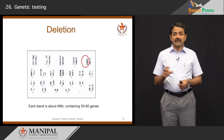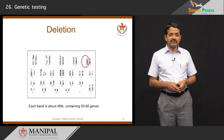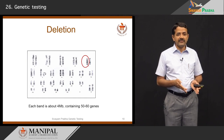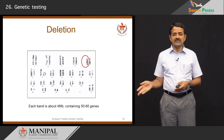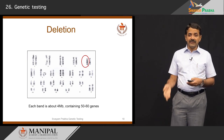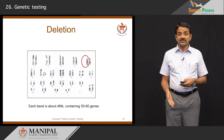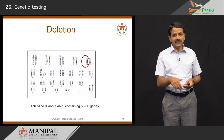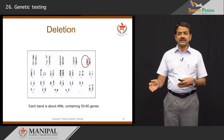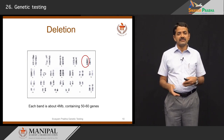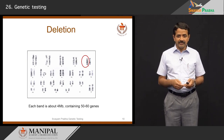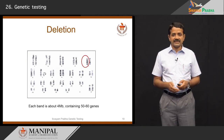Traditional karyotyping has a resolution of about 4 megabase pairs, which usually contains somewhere between 50 to 60 genes on average. For a genetic defect to be detected, it must be large by traditional karyotyping. What is beyond the resolution of karyotyping is what we call submicroscopic deletions or duplications, which will be discussed later.